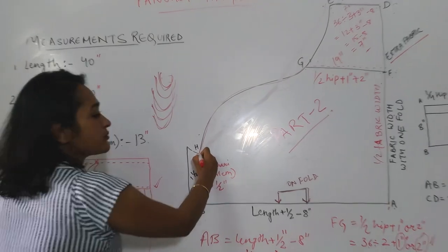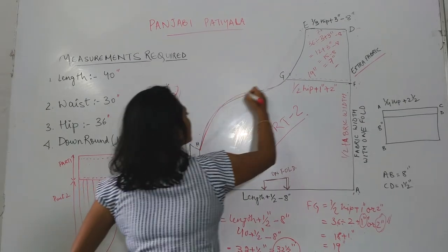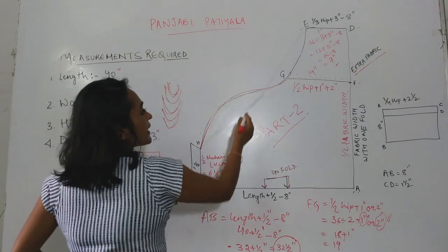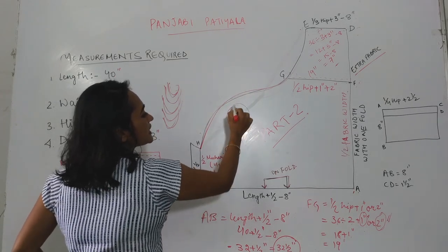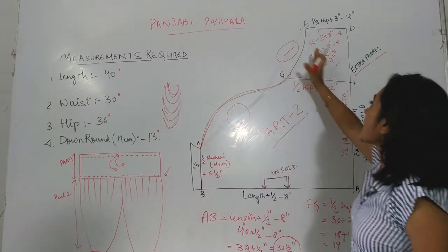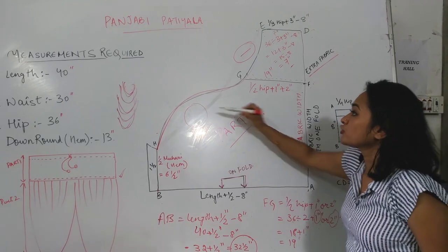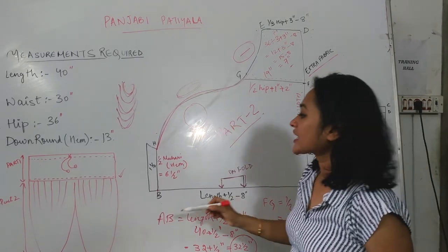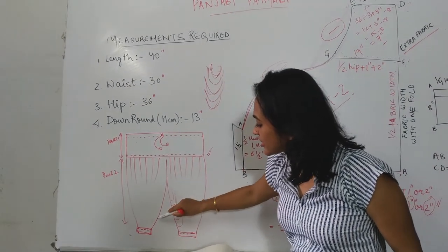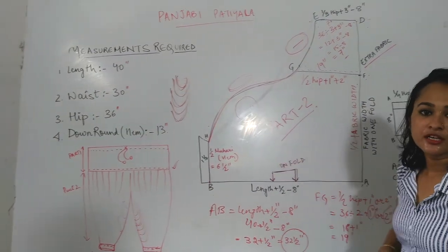This is the H point — it is a free-hand drawing. What is happening here is that I have taken some extra fabric here and taken fabric minus here. When fabric is minus here and plus here, logically the fullness will remain here. Then the folds in Punjabi Patiala will come due to this extra fabric which we have taken here.